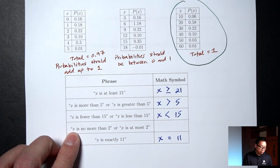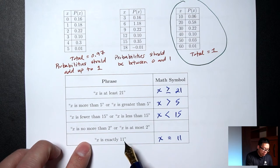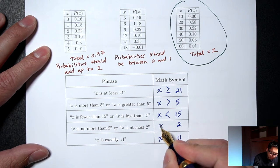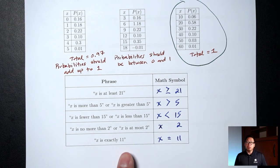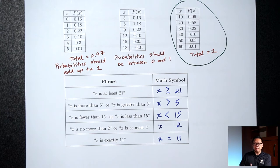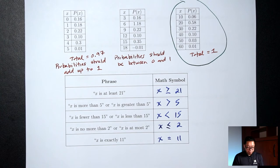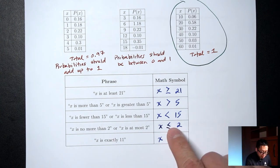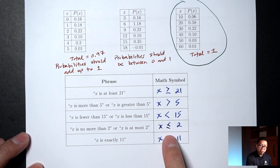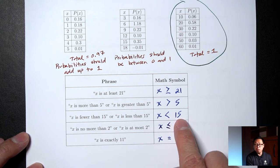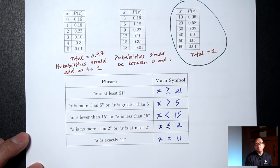'X is no more than 2,' or 'X is at most 2' — at most 2 means 2 is the biggest it can be, so 2 or less. This translates to X ≤ 2, using the less-than-or-equal symbol. Less than or equal includes the 2, whereas 'less than 15' means you don't include 15 — only values strictly less than 15.